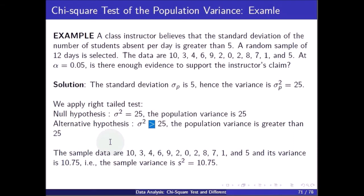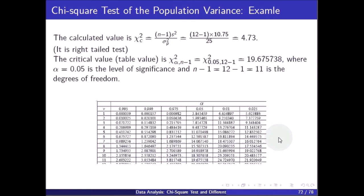The sample data are 10, 3, 4, 6, 9, and the sample variance is 10.75. The calculated chi-square value is (n-1) times s square divided by sigma p square. With a total sample size of 12, this gives 11 times 10.75 divided by 25, and the calculated chi-square value is 4.73.